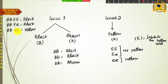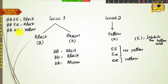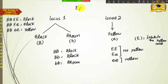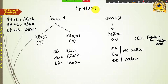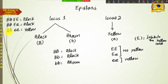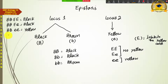جب ایک locus پر موجود gene دوسرے locus پر موجود gene کی expression کو hide کر دے تو اس phenomenon کو epistasis کہتے ہیں۔ یہاں epistatic gene small e ہے اور capital B hypostatic ہو گیا کیونکہ اس کی expression mask ہو گئی اور small e نے اپنا yellow color impose کر دیا۔